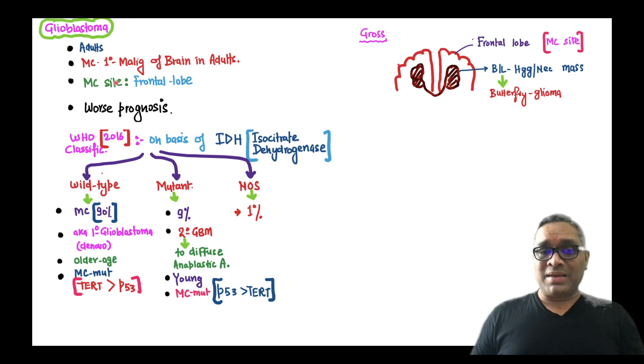These are the most common primary malignancy of the brain in adults and their most common site is frontal lobe and they carry worse prognosis. WHO in 2016 gave their classification on the basis of IDH gene, which is also known as isocitrate dehydrogenase.